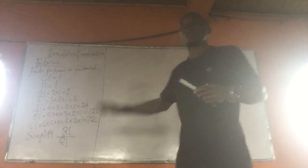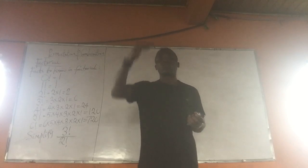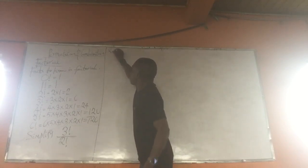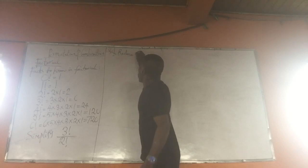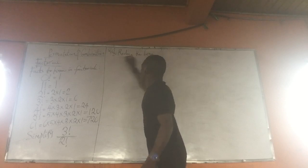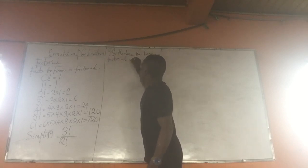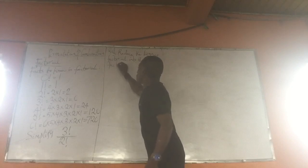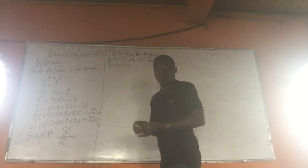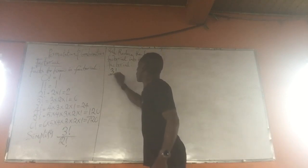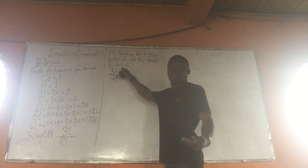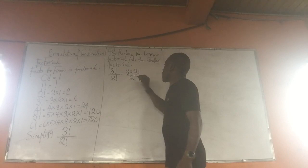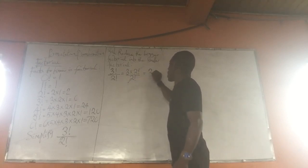Here, what the student needs to understand is that 3 Factorial is greater than 2 Factorial. All they have to do is reduce the bigger Factorial into the smaller Factorial. This means 3 Factorial becomes 3 multiplied by 2 Factorial, over 2 Factorial. The 2 Factorial cancels, and the answer is 3.